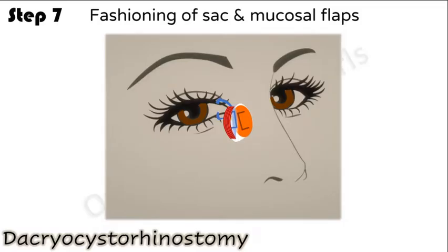Step 7: usually the posterior flaps are trimmed, as suturing them is technically very difficult, and only the anterior flaps are fashioned.